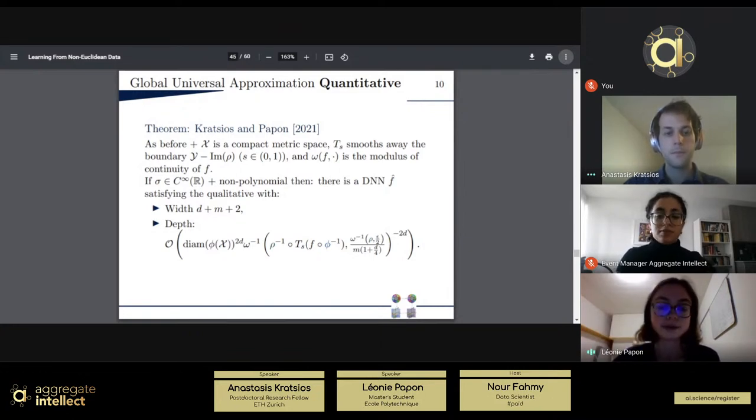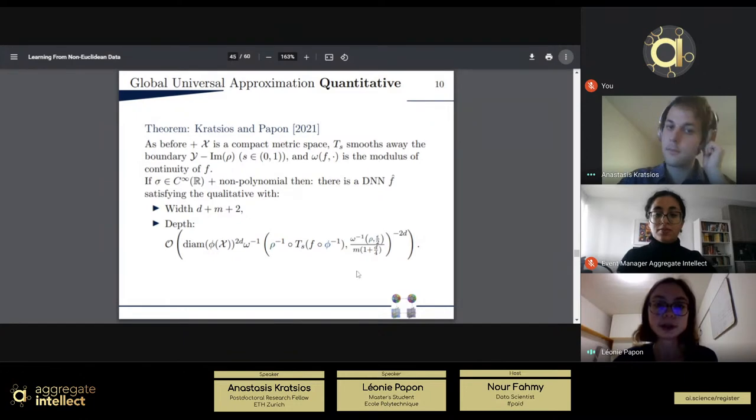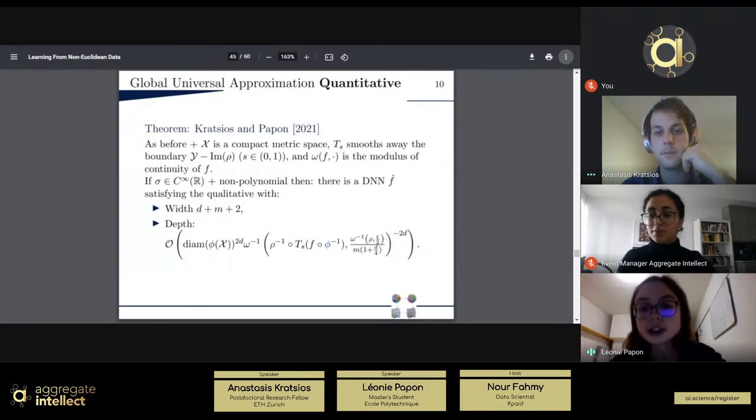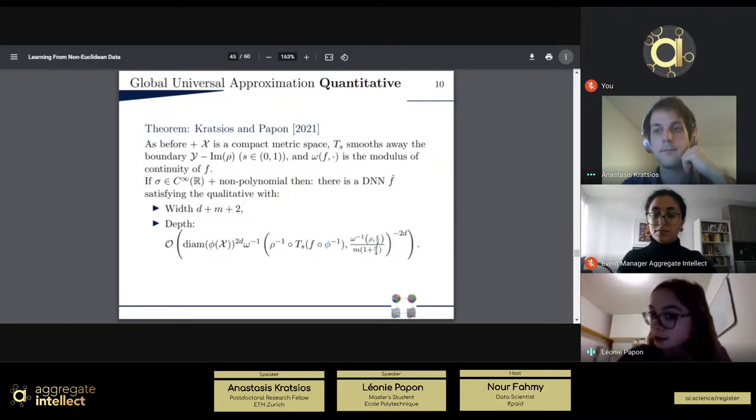And then we have the readout and the feature map here and here. And here, we have the inverse models of continuity of this big function. And, basically, what it tells you is that the smoother your function is, the less deep your network needs to be. And it is quantified by the input dimension, the output dimension, and the inverse modulus of continuity of the readout map. So, here is our main quantitative results.